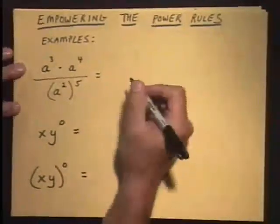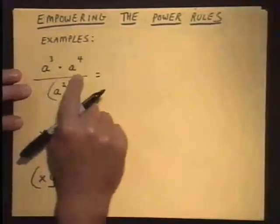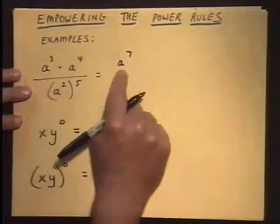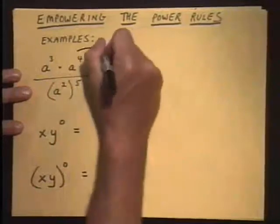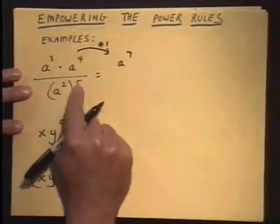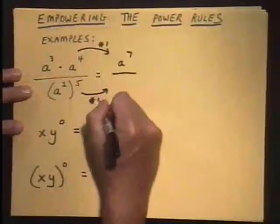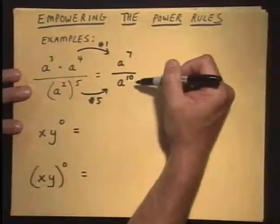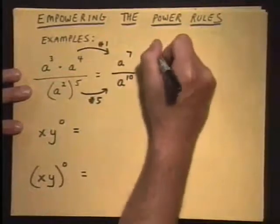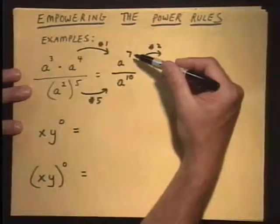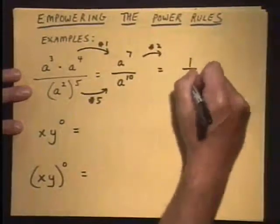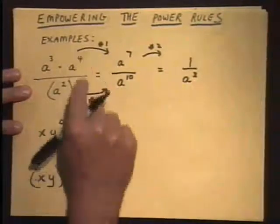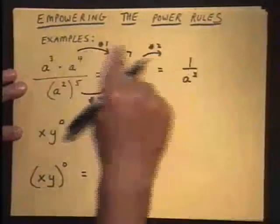In the numerator, we're multiplying same bases, so we use power rule one and add the powers on the three and the four: a to the third times a to the fourth gives us a to the seventh. On the bottom, we have a power raised to a power — power rule five — multiply the powers to get a to the tenth. Now we have a to the seventh divided by a to the tenth. Using rule two, we subtract the powers. Subtracting up would give a negative power, so we subtract down: ten minus seven, giving us one over a to the third, keeping the exponent positive.